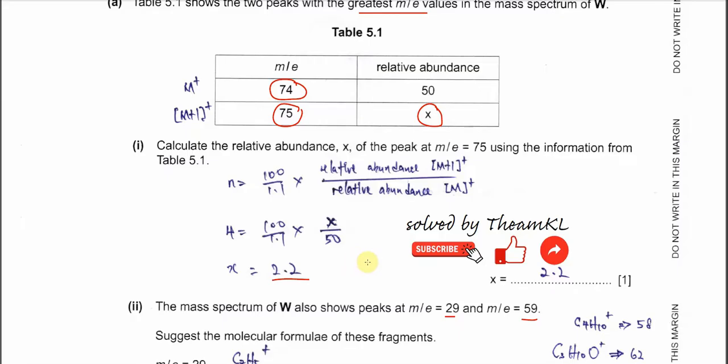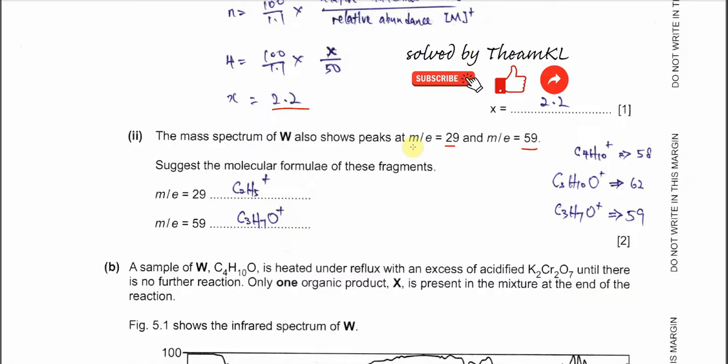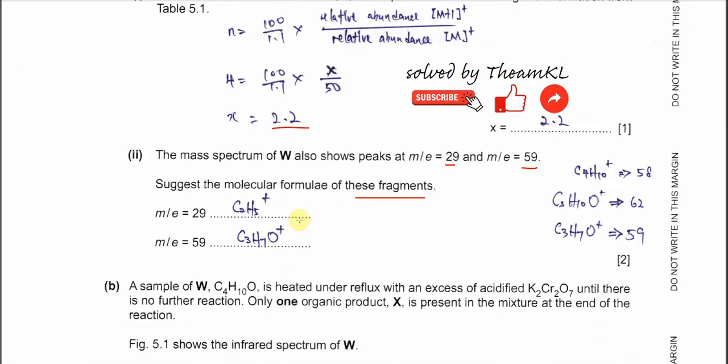Now let's move on to part 2, which is more challenging. The mass spectrum of W also shows peaks at m/e 29 and m/e 59. Suggest the molecular formula for these fragments. For m/e 29 it's quite straightforward, it's C2H5. If you sum it up, it's 24 plus 5, so it's an ethyl group. This one is very straightforward, I don't think we need to really spend time on this.